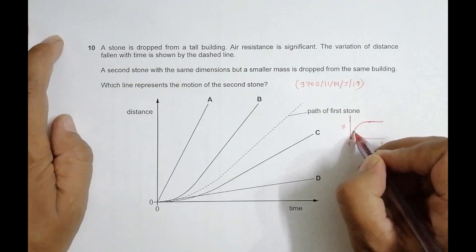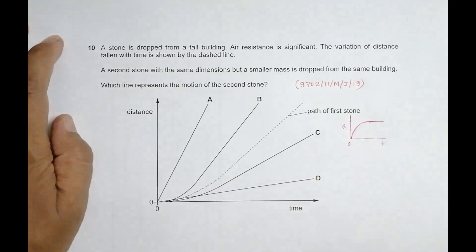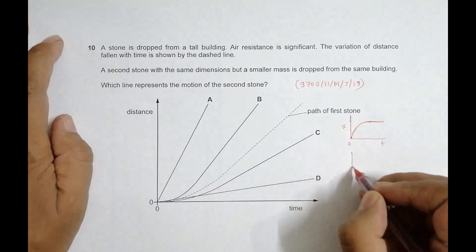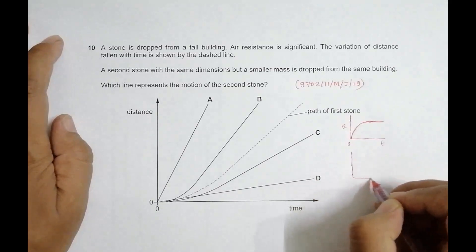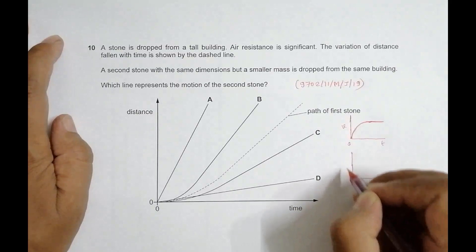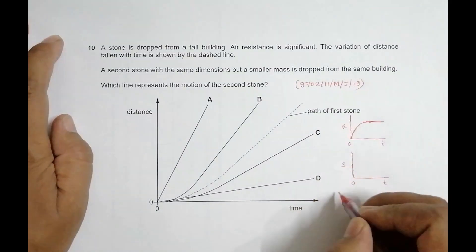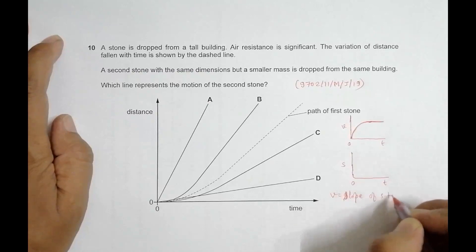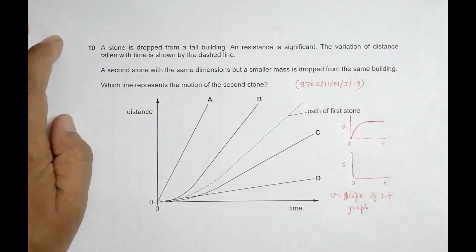The graph of s-t will be somewhat like this. We should know that v equals the slope of the s-t graph. I use this concept while teaching the class as well.